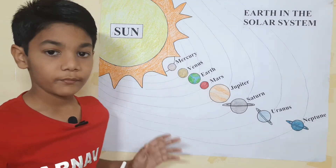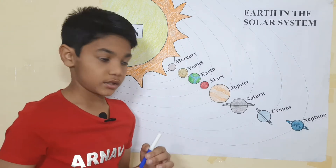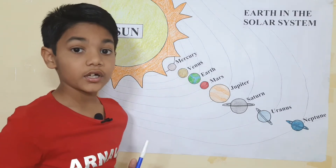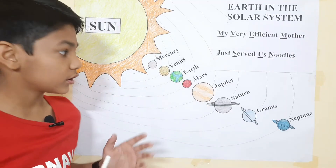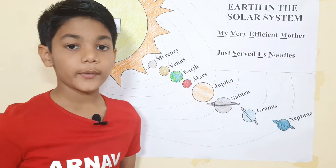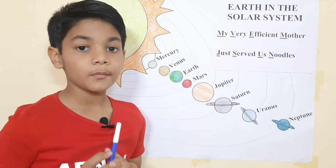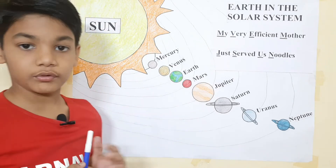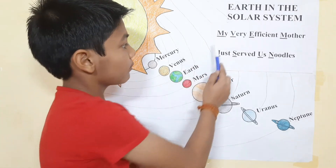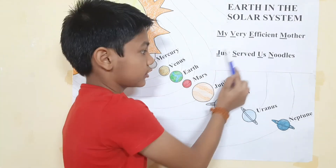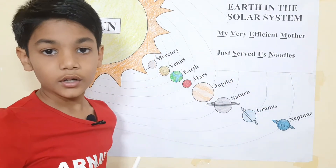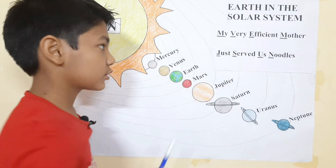All eight planets of our solar system move around the sun in their fixed paths. These paths are elongated and are known as orbits. Here we use a trick to memorize all eight planets of our solar system according to the distance from the sun. The trick is: My Very Efficient Mother Just Served Us Noodles.